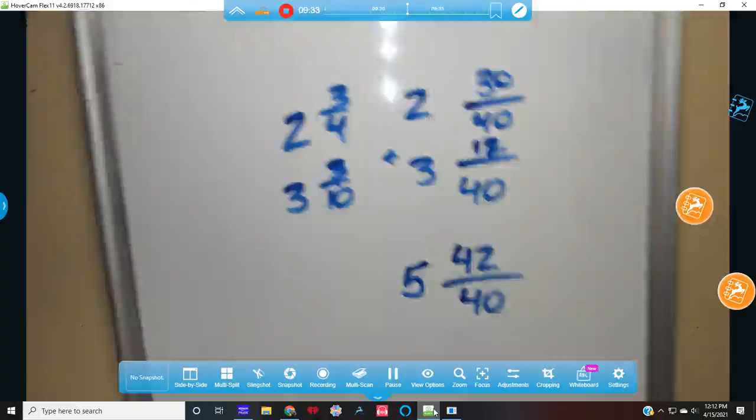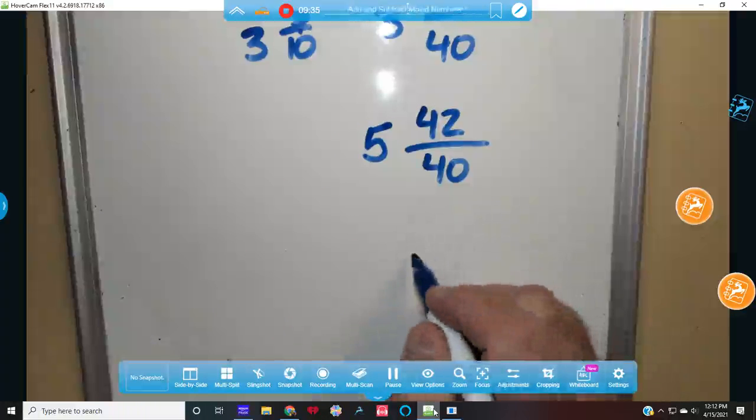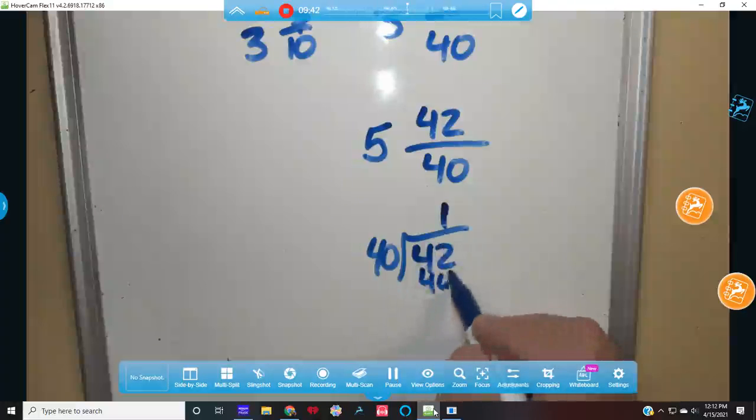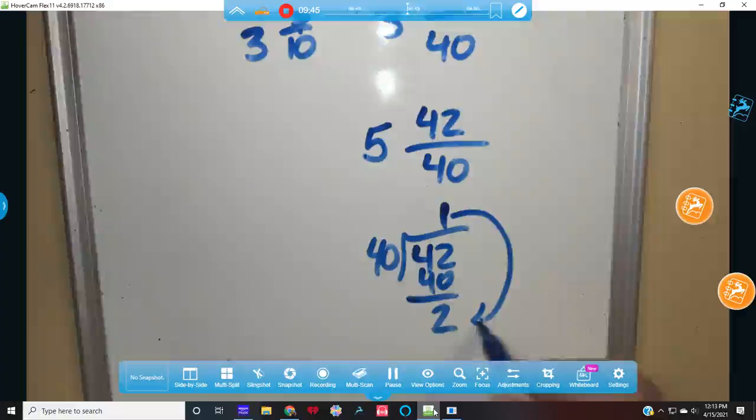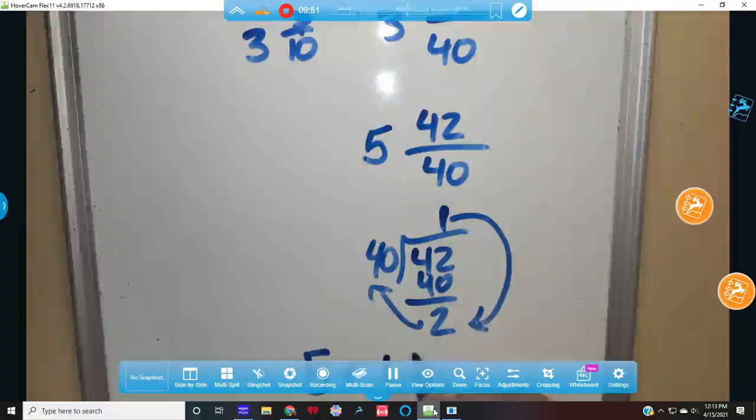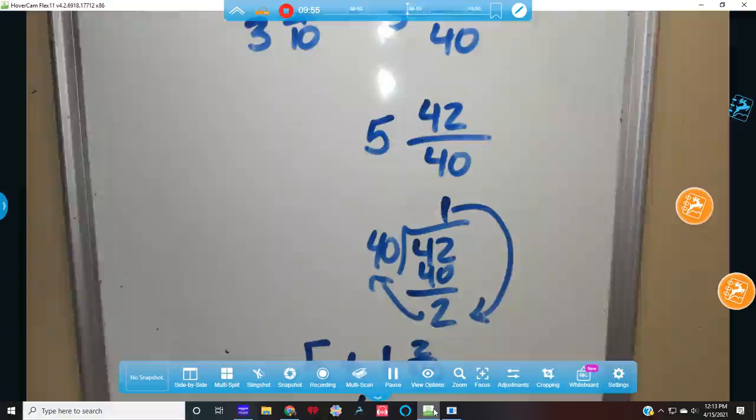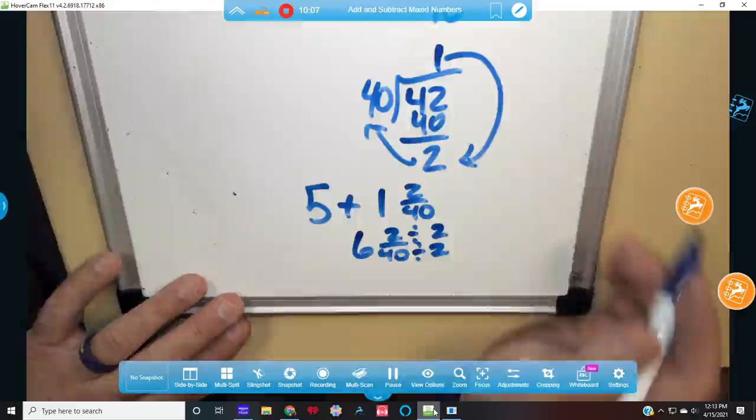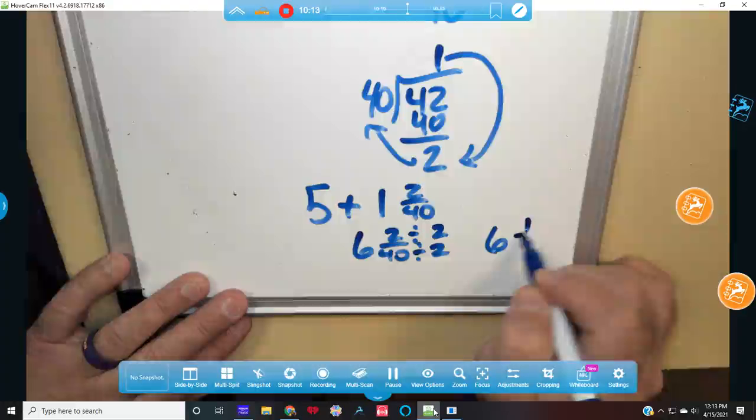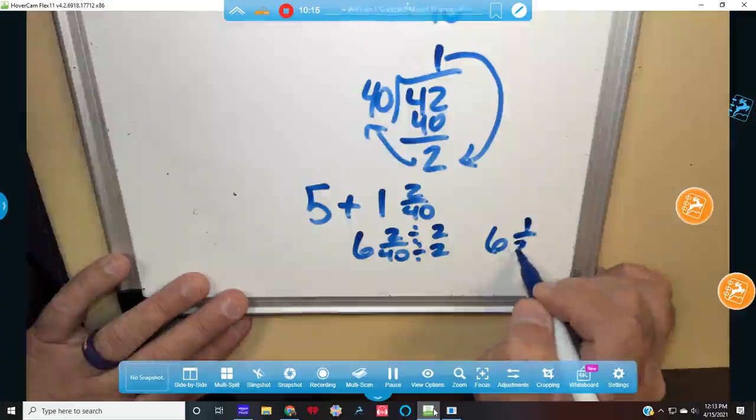So I'm going to have 42 fortieths and 2 plus 3 is 5. 5 of 42 fortieths. Can't have that happen. So 42 divided by 40, I'm going to get once. So I have 5 plus 1 and 2 fortieths. Well, we can make it 6 and 2 fortieths, but that's still not right because we still need to divide this by 2 and this by 2. We're still going to divide those both by 2. So my final is going to be 6 and 1 twentieth.